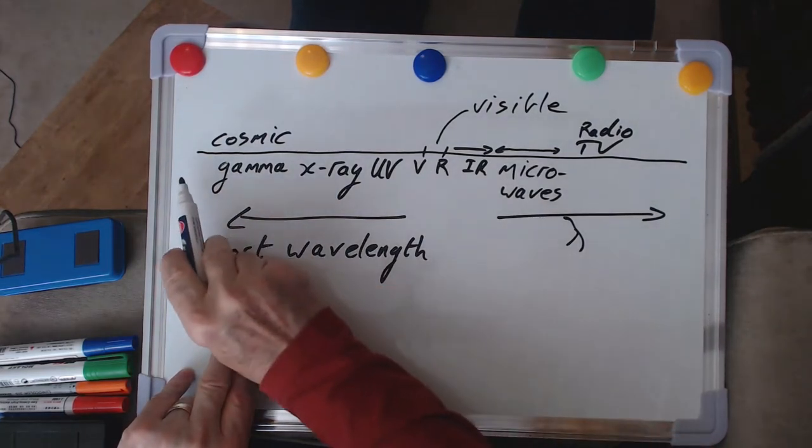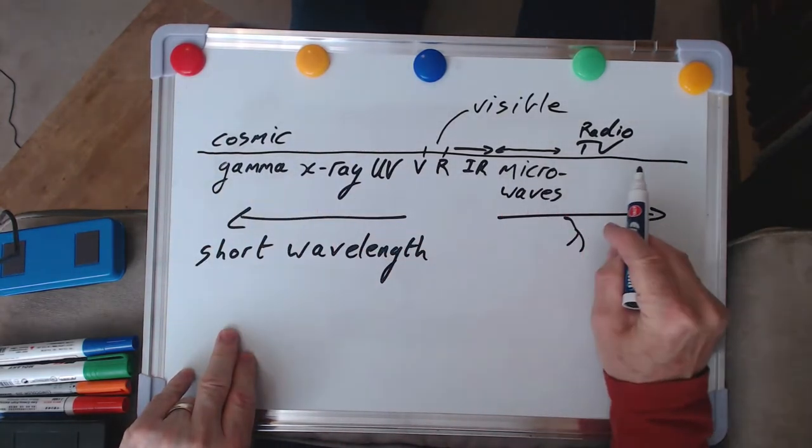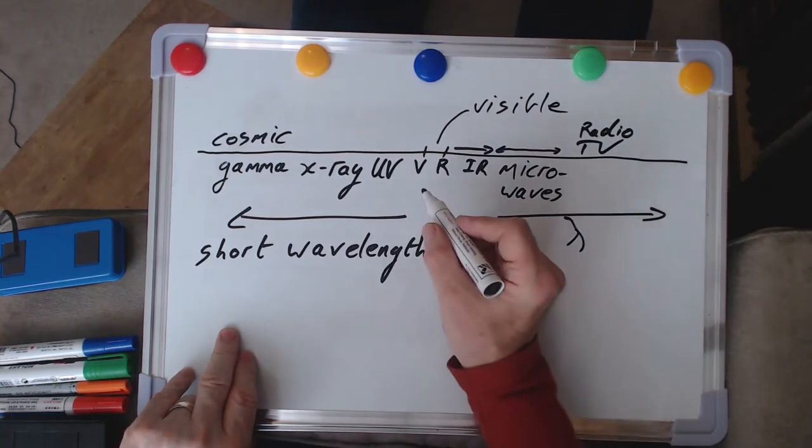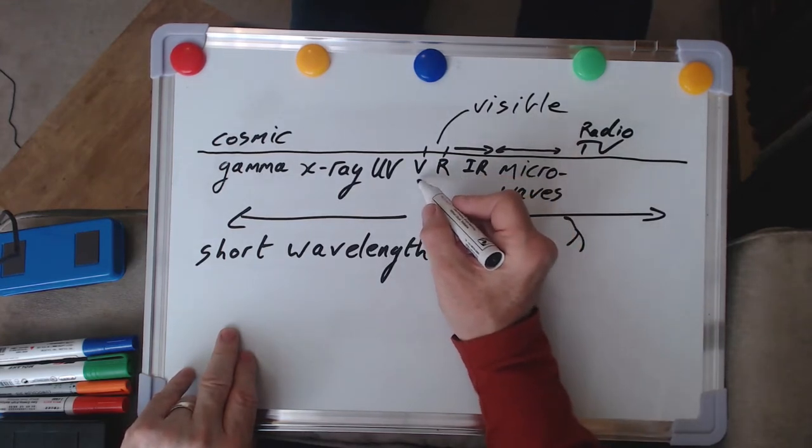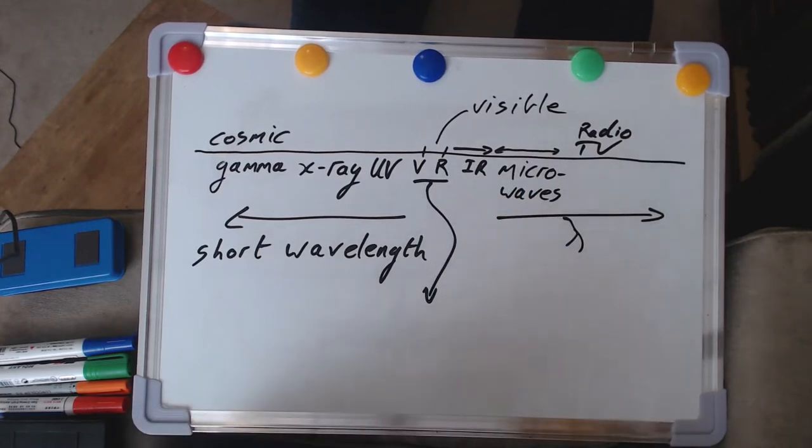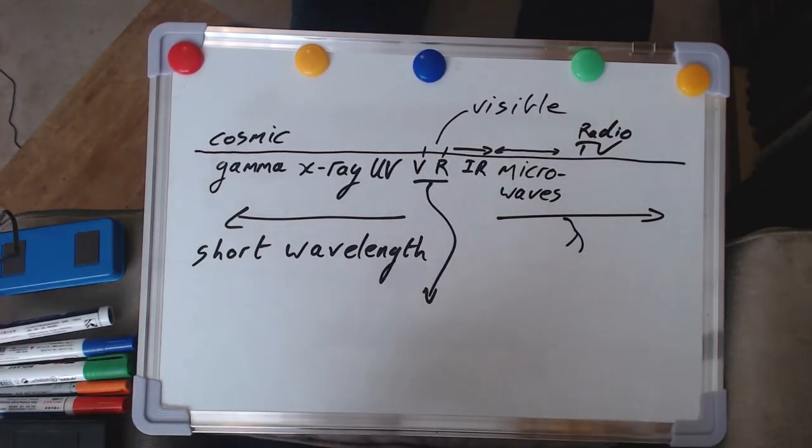But it is a spectrum. It's a continuous variation of wavelengths as we go through. And as I say, one part of it, just this little bit here, is what we associate with visible light, the stuff that we can see.